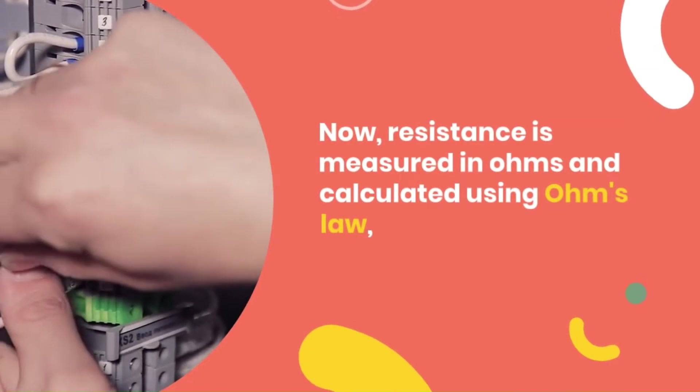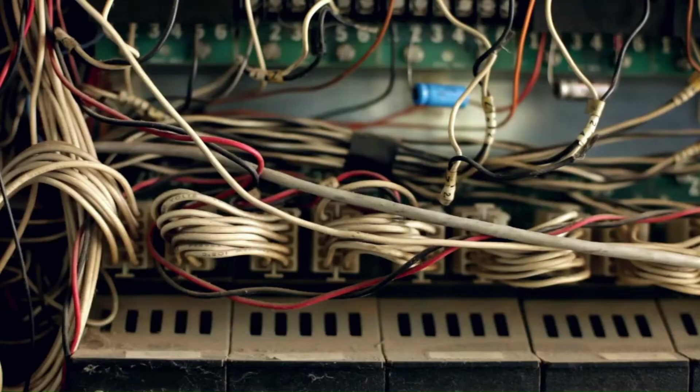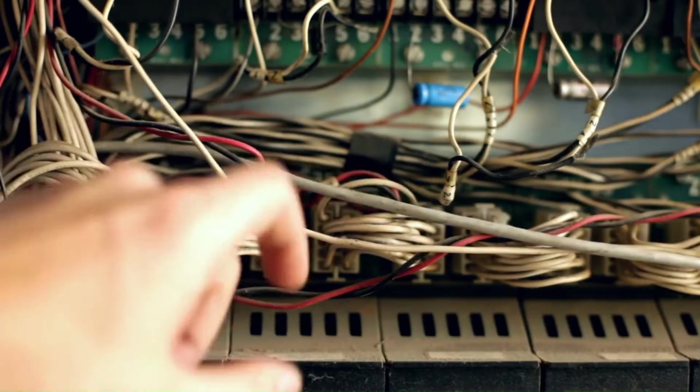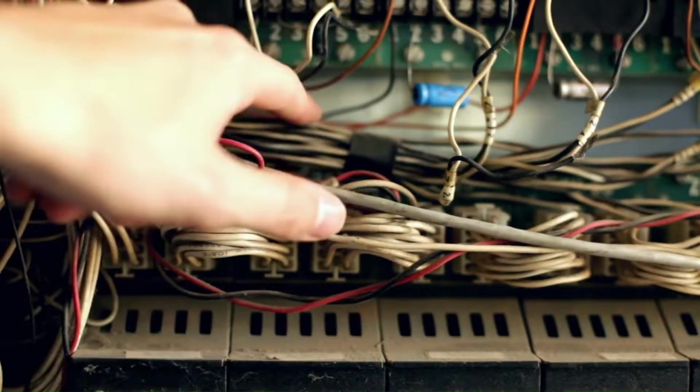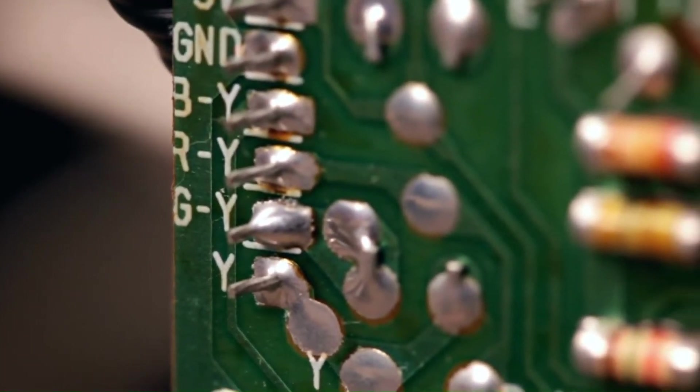Now resistance is measured in Ohms and calculated using Ohm's law, which I've already discussed in a different video. The Ohm's law states that for calculating resistance, R is equal to V upon I, where R is the resistance, V is the voltage and I is the current.